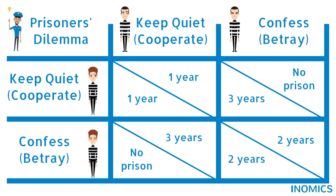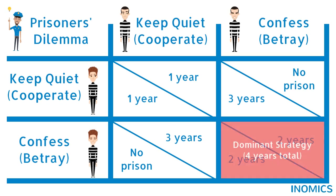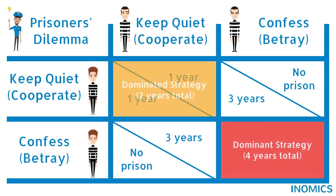In this example, we would call betraying the dominant strategy and staying quiet the dominated strategy. Confessions always produce the best scenario for Holly, and vice versa for Max, even though it is the worst outcome for the group.